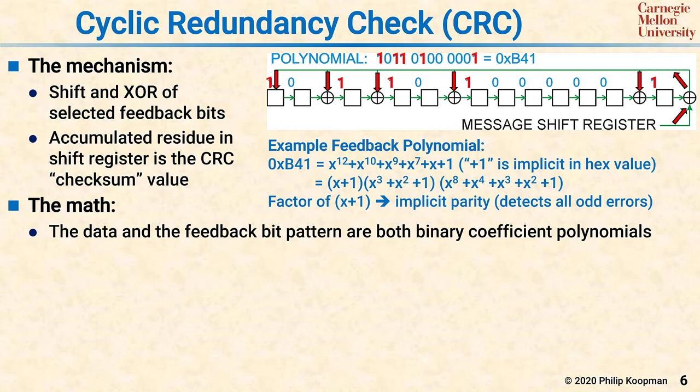This is a polynomial that you can factor, as you may have had in math class. You can notice that if you break it up into its factors, there's a factor of x plus 1, where x plus 1 implicitly means that there's a parity computation. So if you have a polynomial used for a CRC, and it has a factor of x plus 1 — in other words, it's evenly divisible by x plus 1 — you know that the result will detect all odd numbers of bit errors, just as if there had been an explicit parity bit.